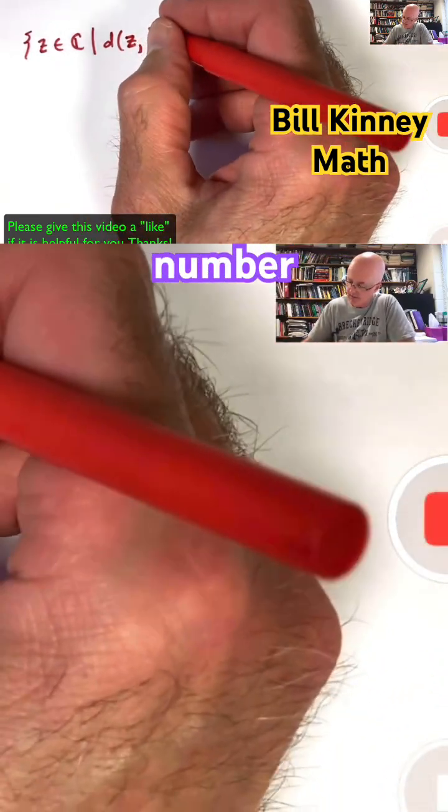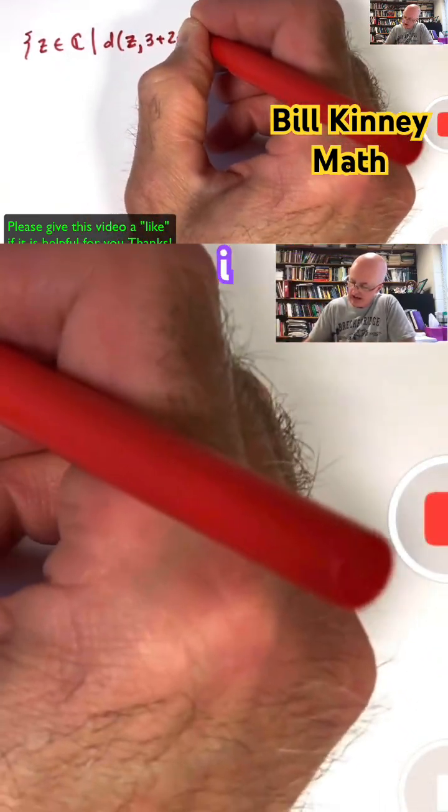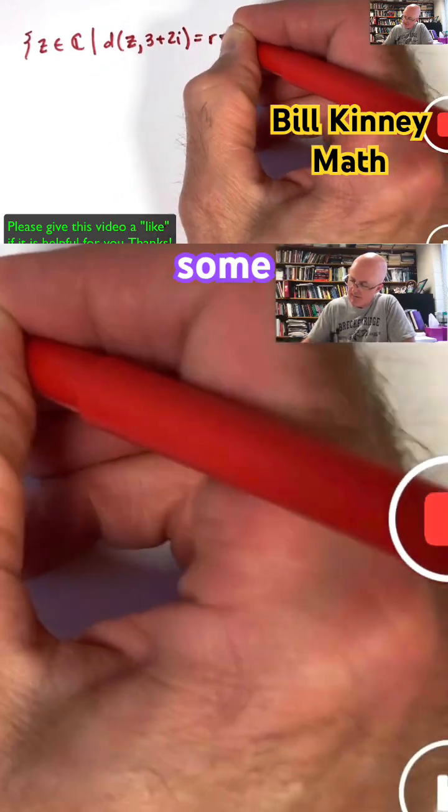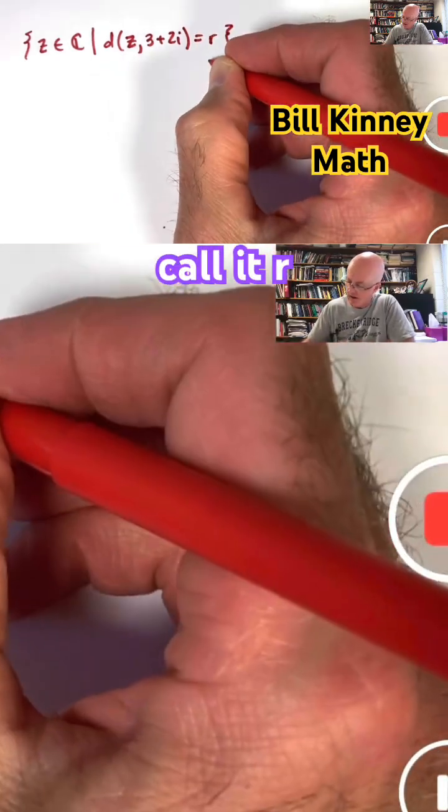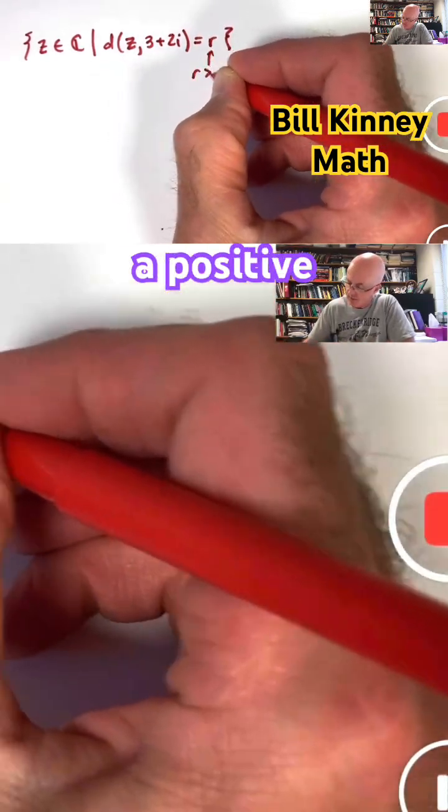well, let's say the particular complex number 3 plus 2i equals some positive real number, call it R, that's a positive real number right there